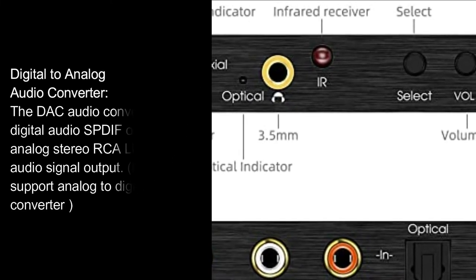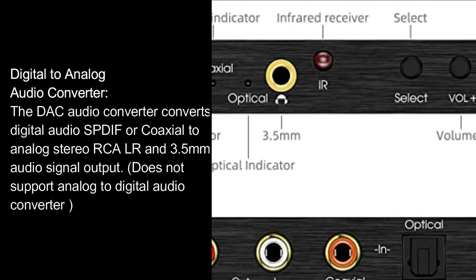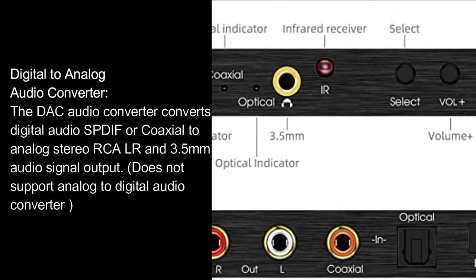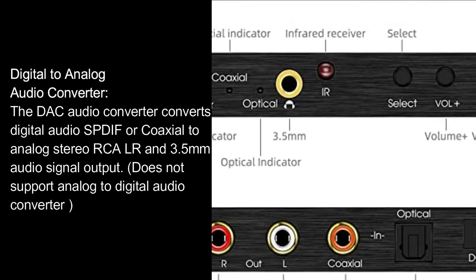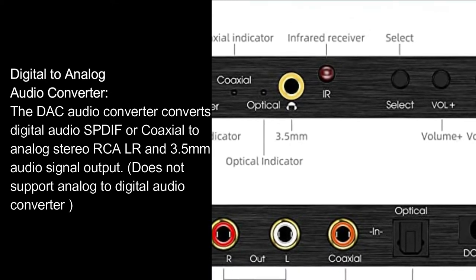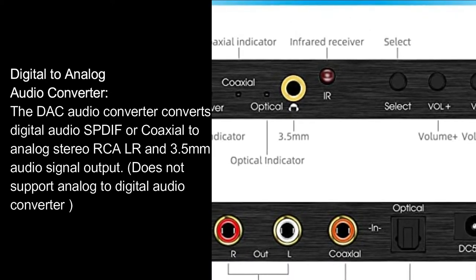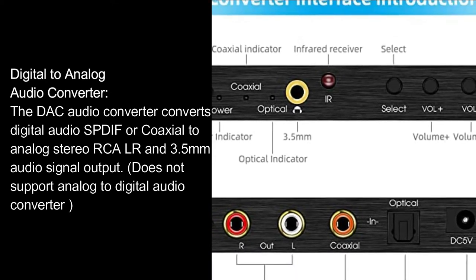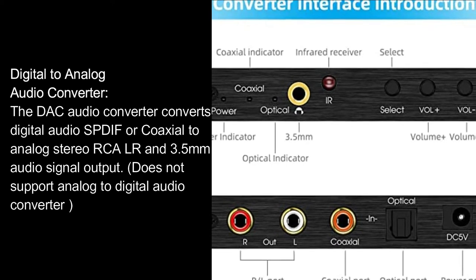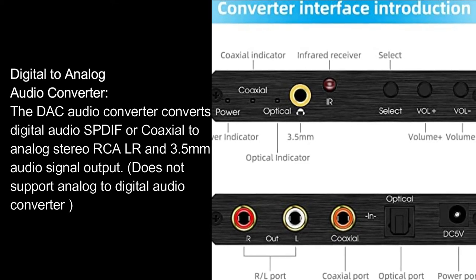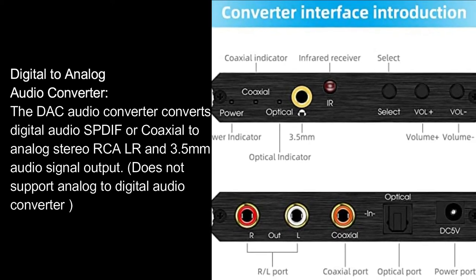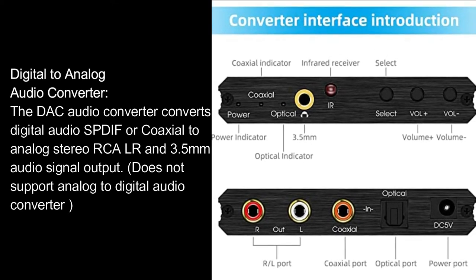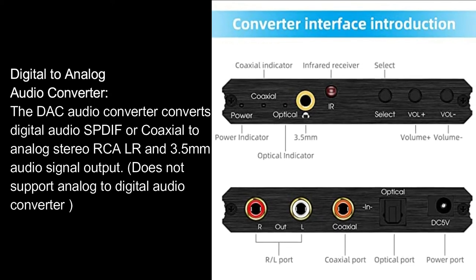Digital to Analog Audio Converter. The DAC audio converter converts digital audio SPDIF or coaxial to analog stereo RCA/LR and 3.5mm audio signal output. Does not support analog to digital audio conversion.